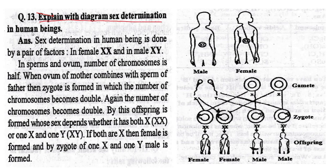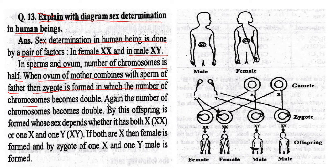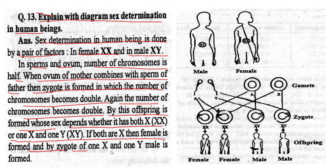Question No. 13. Explain sex determination in human beings. Sex determination is done by a pair of chromosomes — XX in female and XY in male. In sperm and ovum the number of chromosomes is half. When the ovum of the mother combines with sperm of the father, a zygote is formed with double chromosomes. If both chromosomes are XX, a female is formed; if one X and one Y, a male is formed.